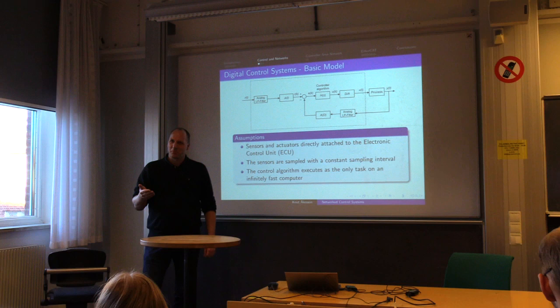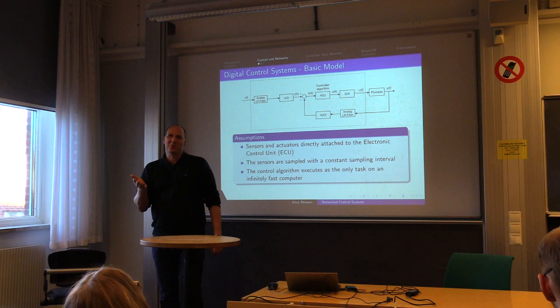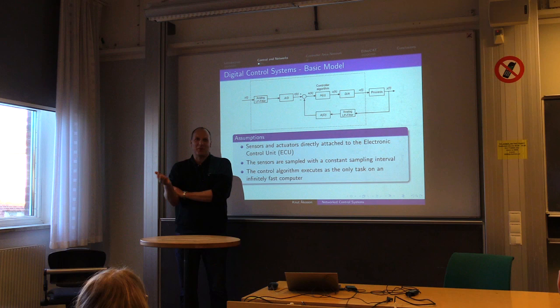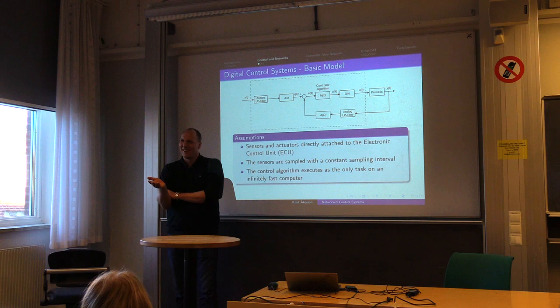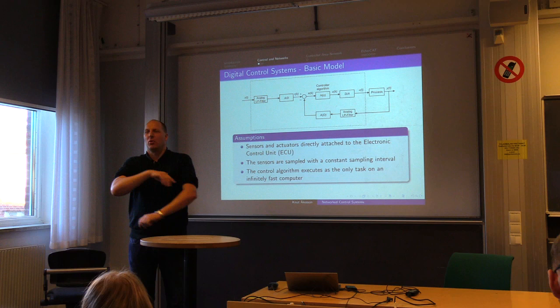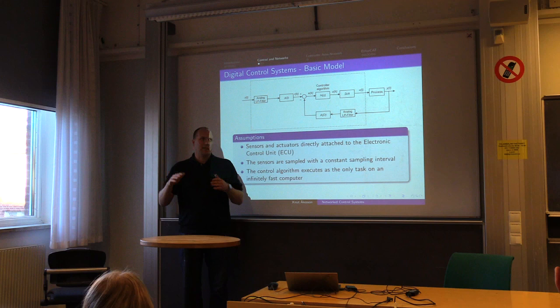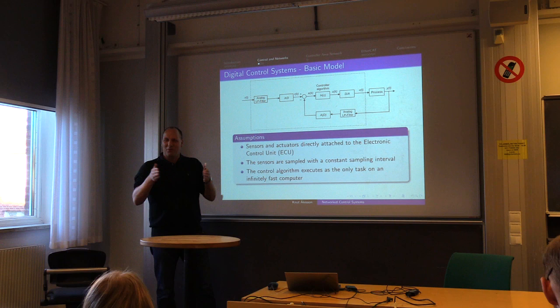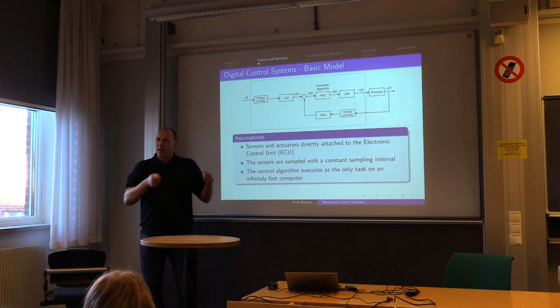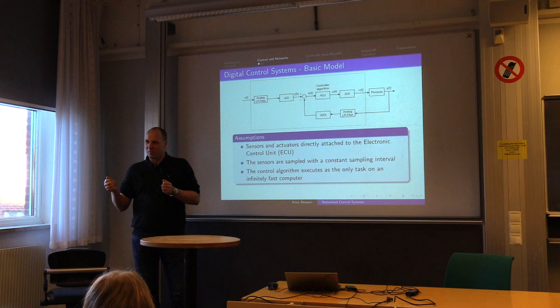When you think about delays, remember from your basic control course: how does delay affect the stability of the closed-loop system? A delay introduces phase delay — it decreases the stability margins. So if you have a process that is stable under the assumption that everything is infinitely fast and you're the only control task using the network, when you hook it up to a network, it might become unstable. These things you must take into account.